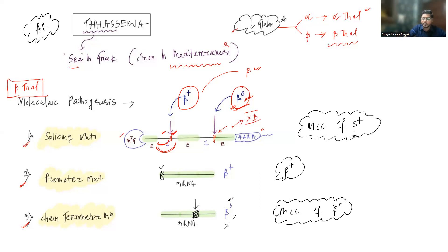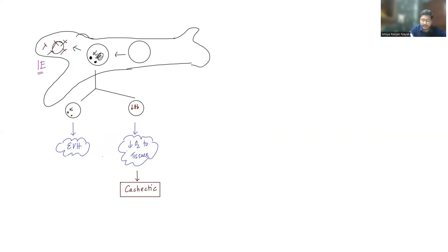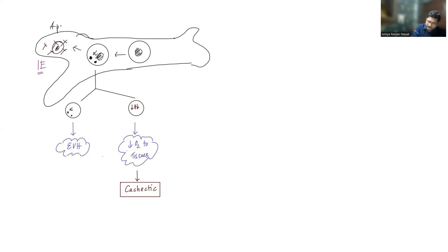Now we'll see what happens in beta thalassemia. If you do not have beta globins, alpha globin chains will tend to accumulate excessively. These alpha globin chains will tend to precipitate on the membrane of developing erythrocyte precursors inside the bone marrow. These erythroblast precursors have nuclei. The alpha chains cause membrane damage, and because of this damage, these precursor erythroblasts can get destroyed inside the bone marrow through the process of apoptosis.